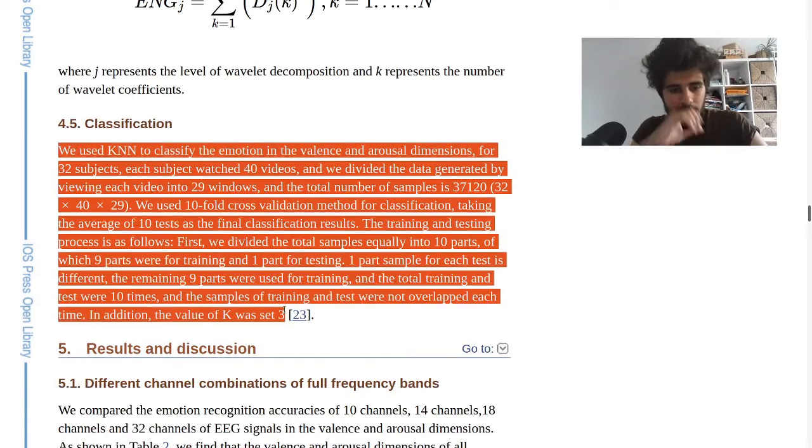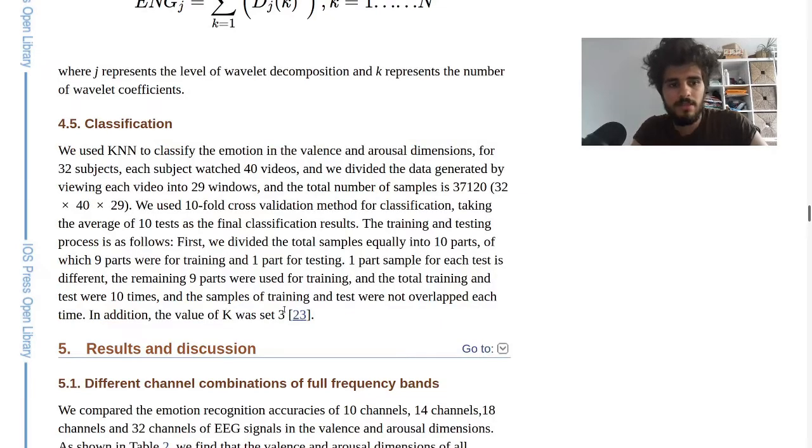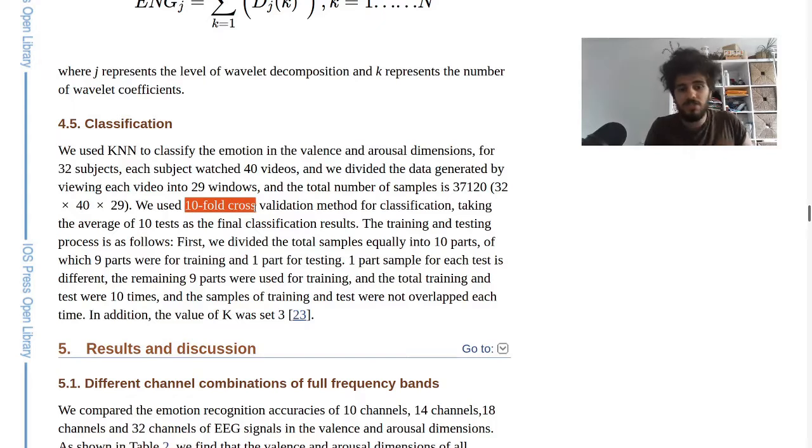If you look here, this whole paragraph, this is where it's problematic. They have 32 subjects and they watch a bunch of videos. They're slicing the data over time and using these snapshots of time as samples for the classifier. The classifier is classifying emotion in a 10-second window or even shorter sometimes to get more data. This is where it's problematic: you have 32 subjects and they're using 10-fold cross-validation.